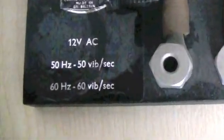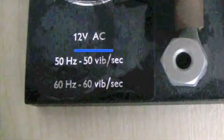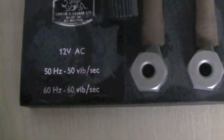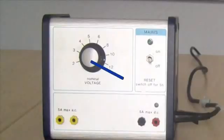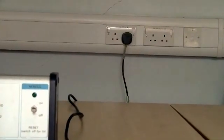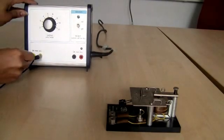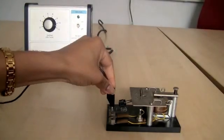Check the voltage on the ticker tape timer and ensure that you select the correct voltage on the power supply. Connect the power supply to the mains, connect the leads to the power supply, and then to the tape timer.